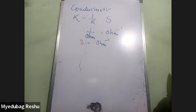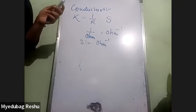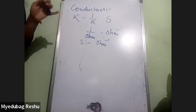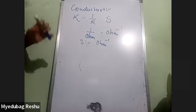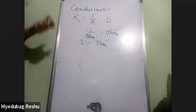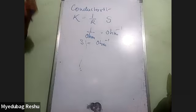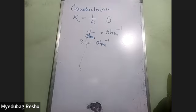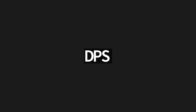Conductance can be defined as the reciprocal of resistivity of a particular conductor. In other words, it is the ease with which electric current passes through a particular conductor, or we can say the tendency by which electric current passes through a conductor. Conductivity is the reciprocal of resistivity.